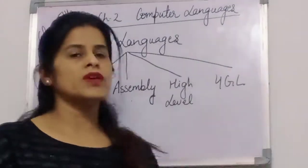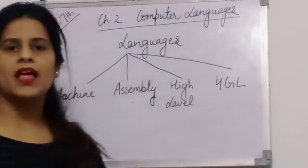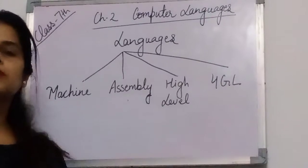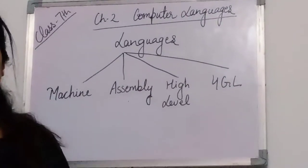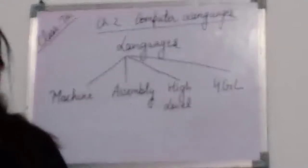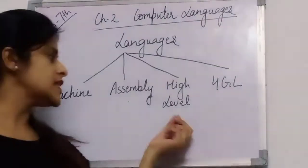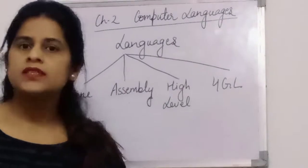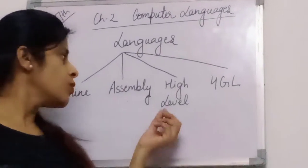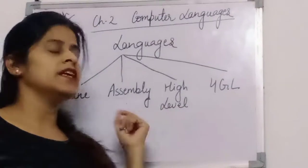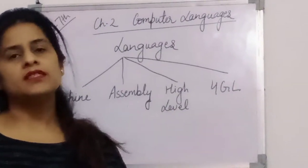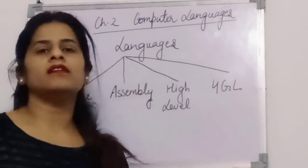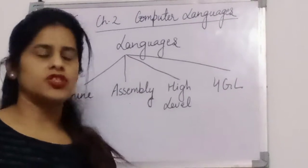The third language is the high level language — that is C, C++, Java. These are high level languages because they use English-like words, so they are easily understood by the users, and it is not a machine dependent language.